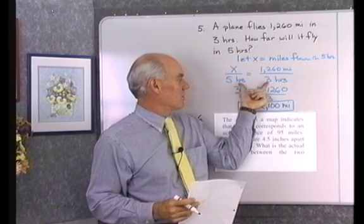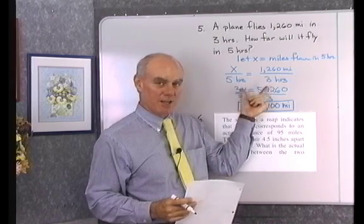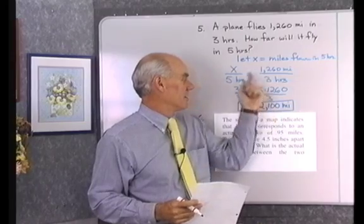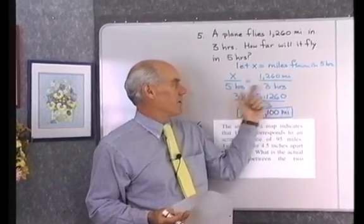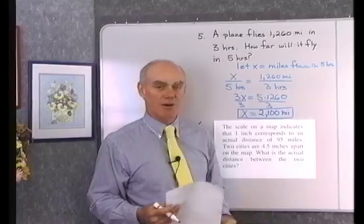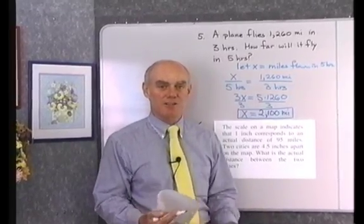So I set up the proportion this way. I use the means extremes property to get an equation. I solve that equation. And that will give me the result. Now, does that make sense? 2,100 miles in 5 hours if I fly 1,260 miles in 3 hours? Yeah, it seems to make a reasonable amount of sense.